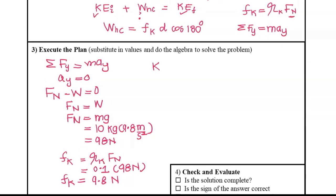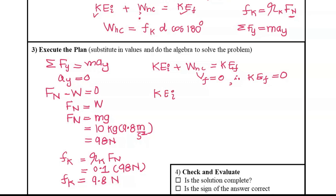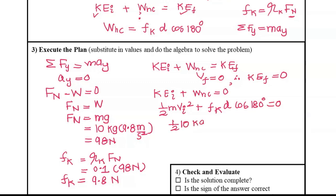Now I'll apply the conservation of energy equation. Potential energy is zero because the object moves at h equals zero level, so mgh equals zero. Final speed is zero because the sled comes to rest, so final kinetic energy is also zero. This gives us: initial kinetic energy plus work non-conservative equals zero. Expanding: one-half times mass times initial speed squared plus kinetic friction force times distance times cosine 180 equals zero.